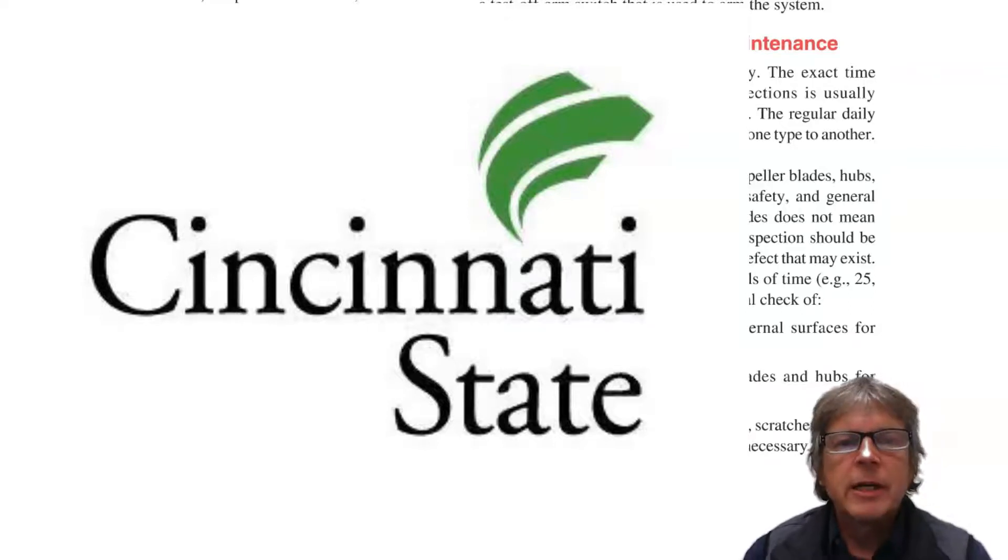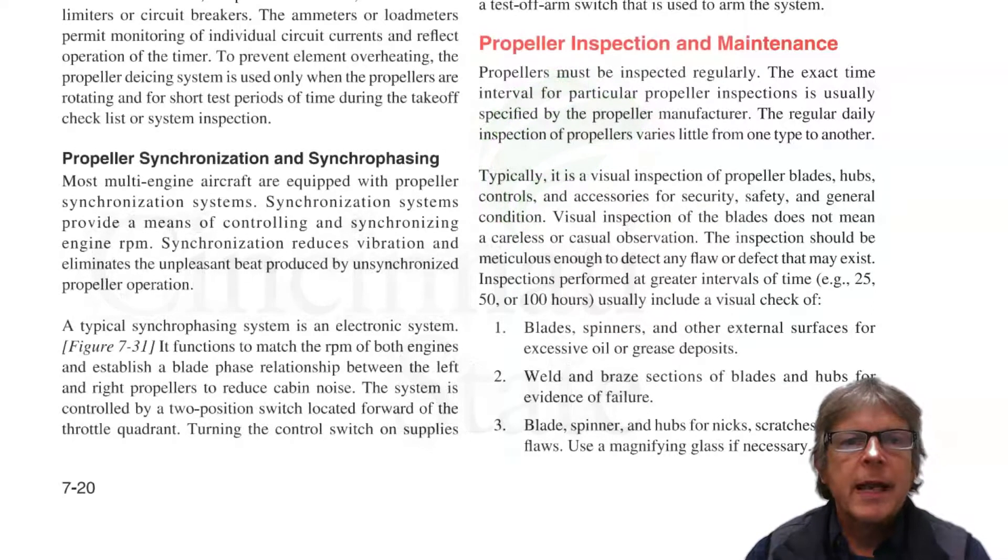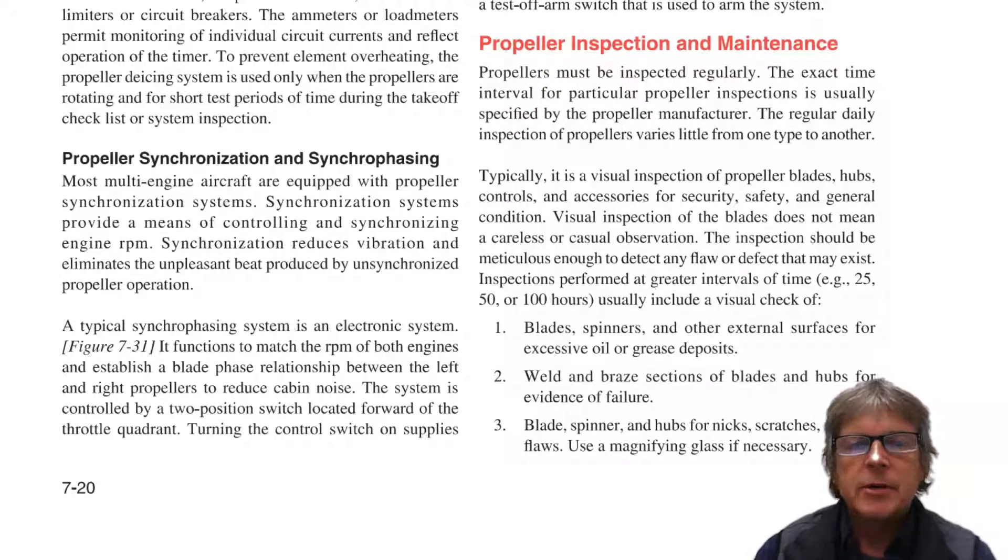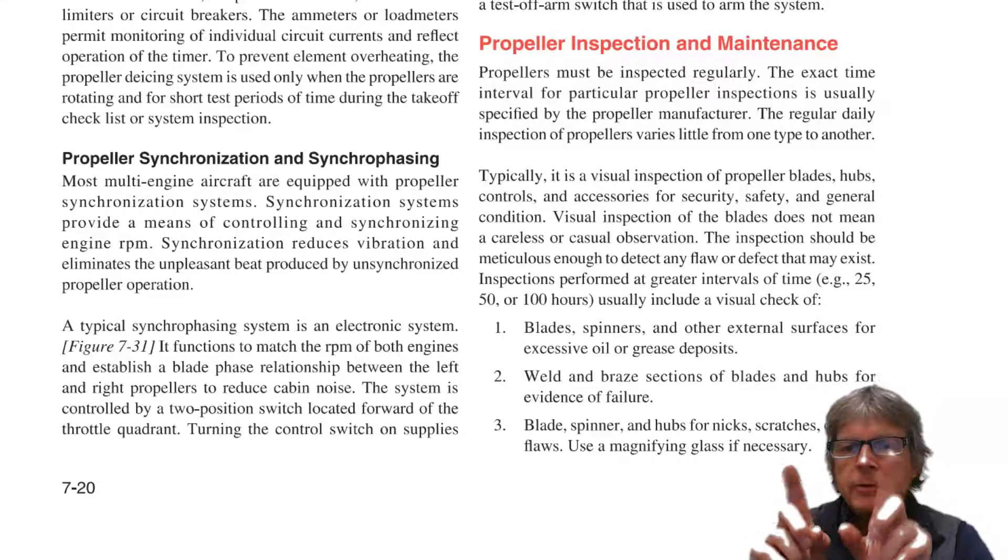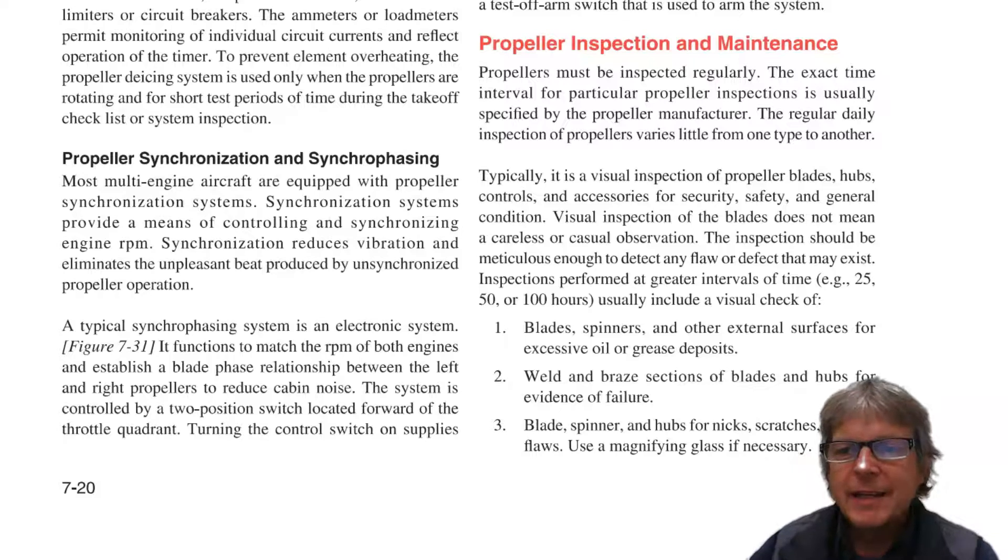Multi-engine aircraft are equipped with what's called a synchro phasing system, and it synchronizes the propellers. So when you have a twin engine airplane, you have two propellers going around, and if they get all out of whack, it can set up a harmonic.